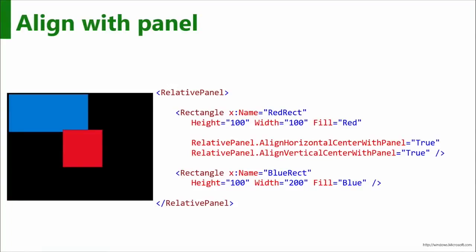Now let's take a look at the syntax for the relative panel. Just like any panel, you wrap your children with it. But once you have it, there's a special attached property that all the children get — it's RelativePanel dot, and then there are a lot of options. In this case, the red rectangle is set to AlignHorizontalCenterWithPanel true, making it centered horizontally, and also vertically centered with the panel. So this isn't relating to another sibling child — it's related to the overall panel, centering it.